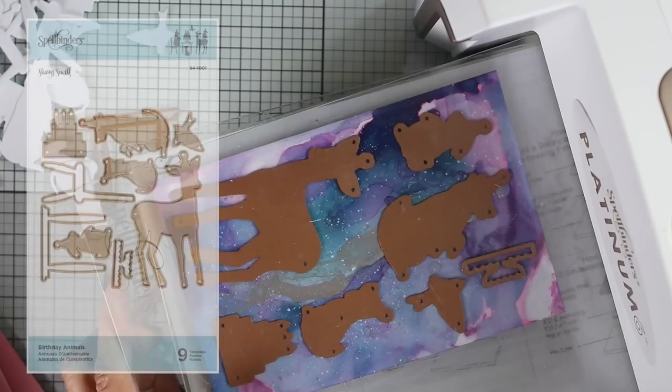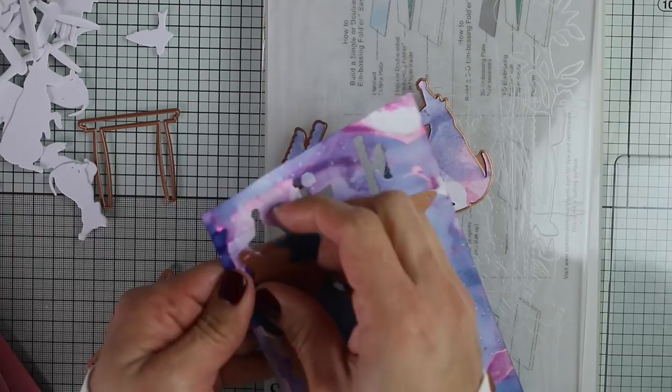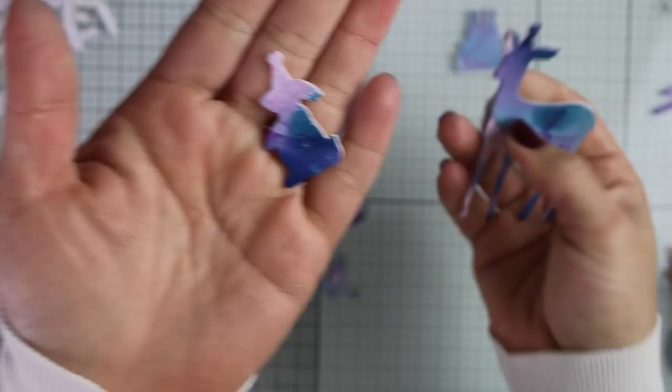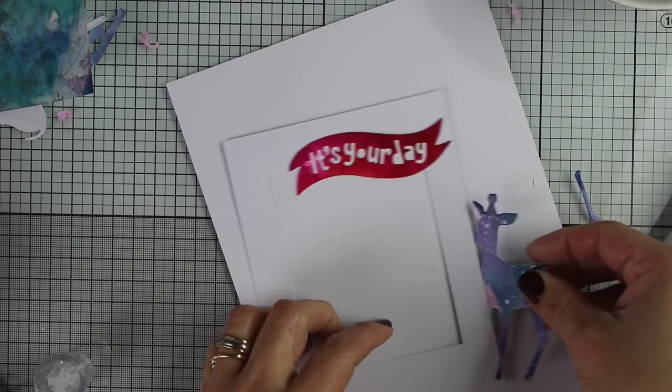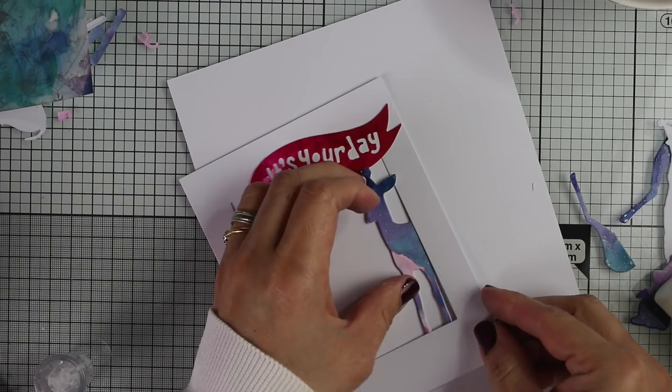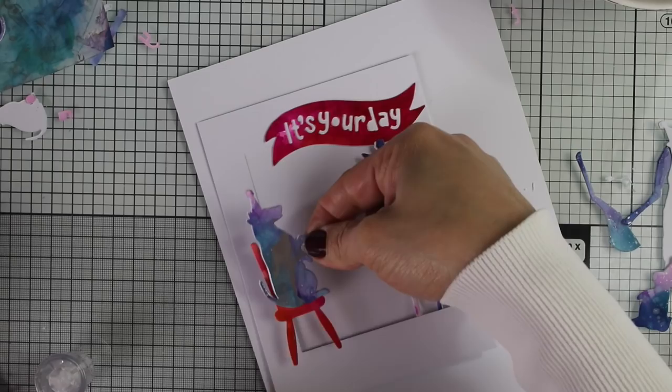Last but not least I have this crazy idea to die cut this alcohol background paper using Bearded Animals die set and to be honest this took me far away from my comfort zone. I love the look and feel of the die cuts, they look very arty, but I didn't know what to do with them and I tried different things. I then decided to add a white background so the die cuts would pop behind that window.